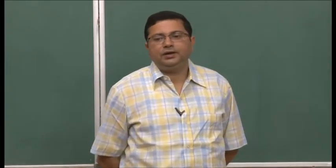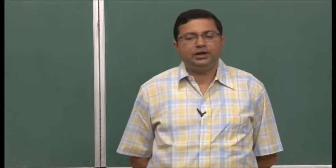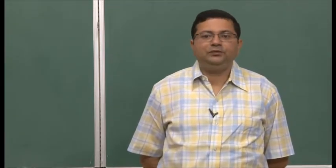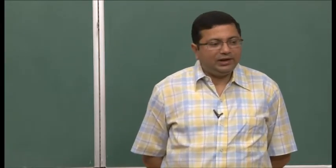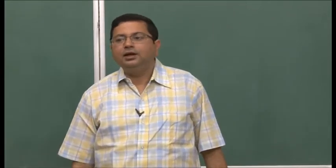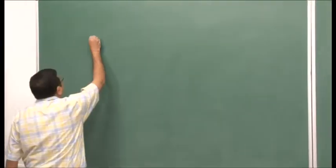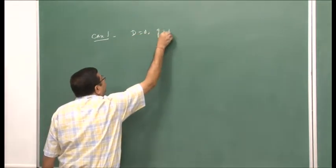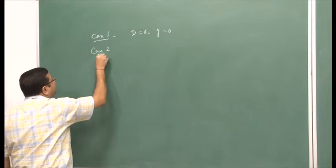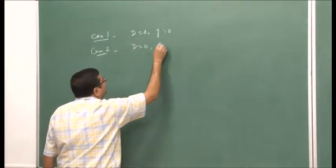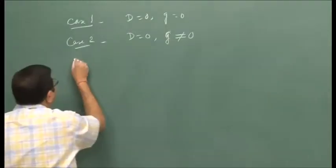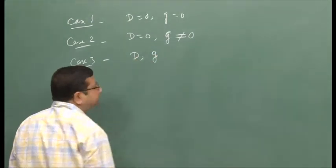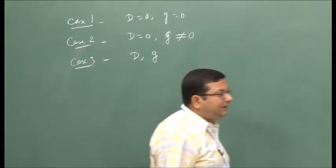In the last lecture, we were discussing the vehicle dynamics for a rocket vehicle. We had considered the equivalent exit velocity as the prime factor in moving the vehicle, and we derived expressions for the change in vehicle velocity for three specific cases: Case 1 with no drag and no gravity, Case 2 neglecting drag but with gravitational force, and Case 3 considering both drag and gravity.